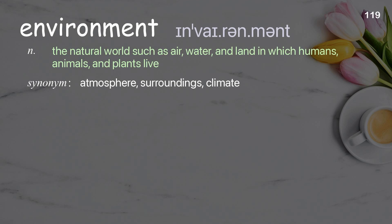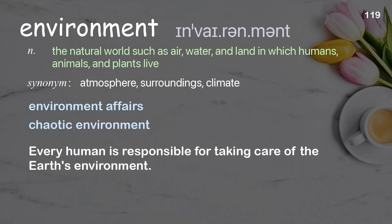Environment: The natural world — such as air, water, and land — in which humans, animals, and plants live. Examples: Chaotic environment. Every human is responsible for taking care of the Earth's environment.